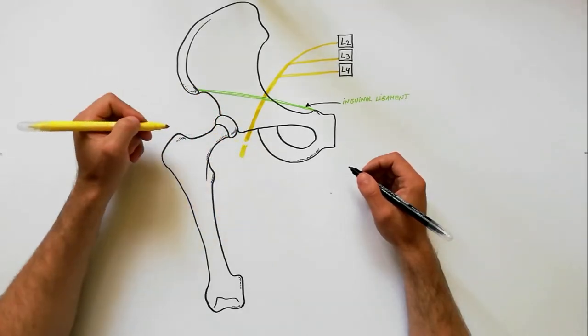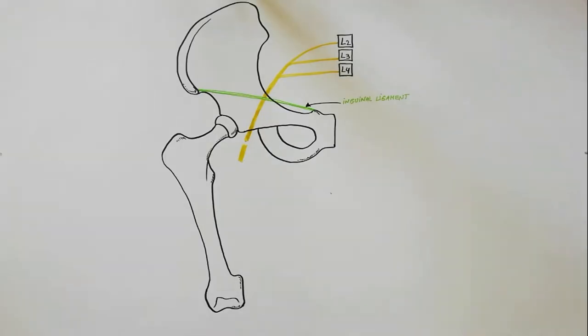It enters the thigh posterior to the inguinal ligament, just lateral to the femoral artery.